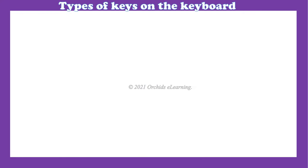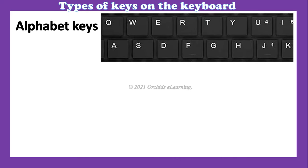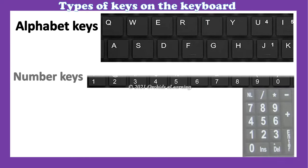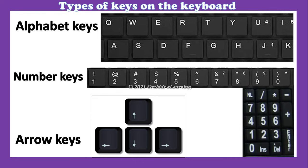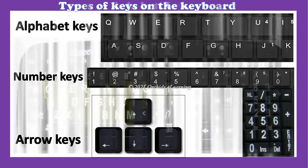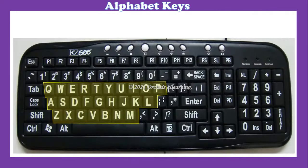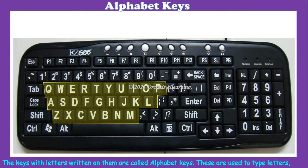The different types of keys on the keyboard are: alphabet keys, number keys, and arrow keys. Let us learn more about each type. Alphabet keys: the keys with letters written on them are called alphabet keys. These are used to type letters and words.